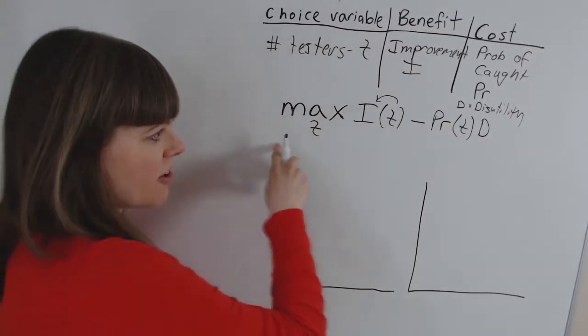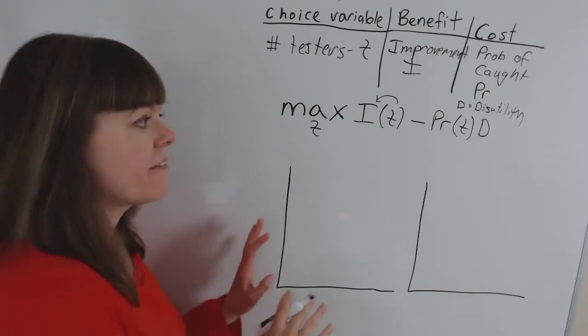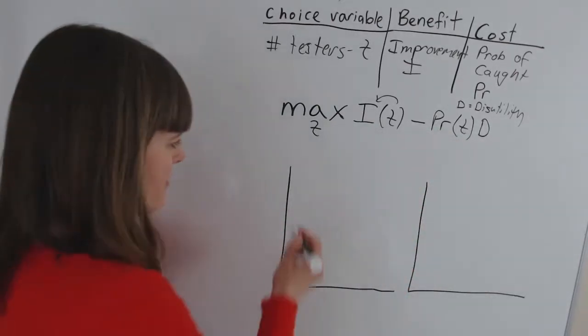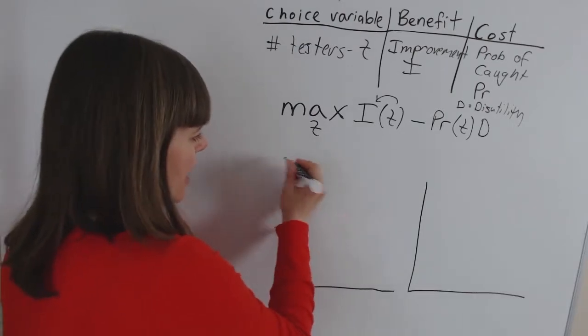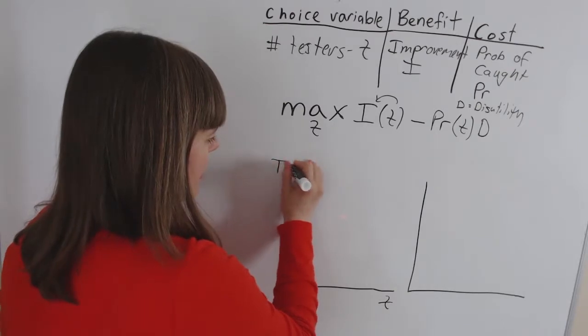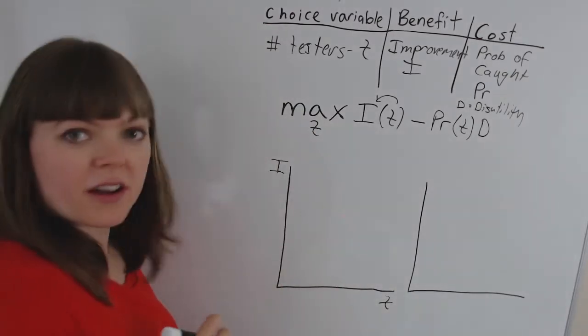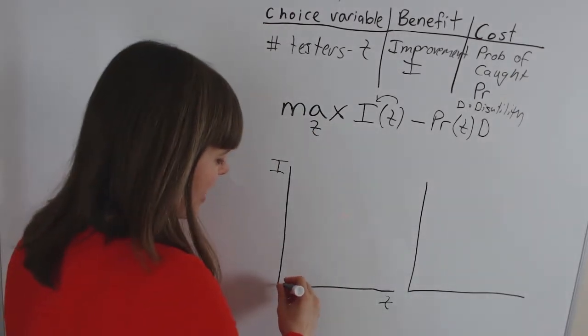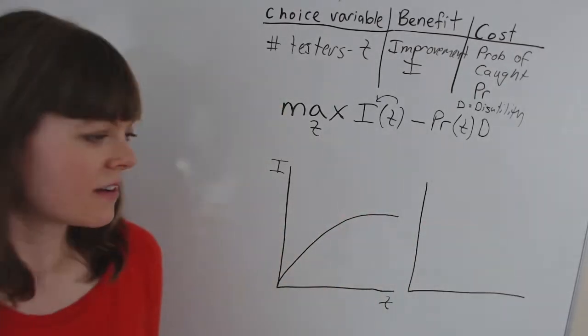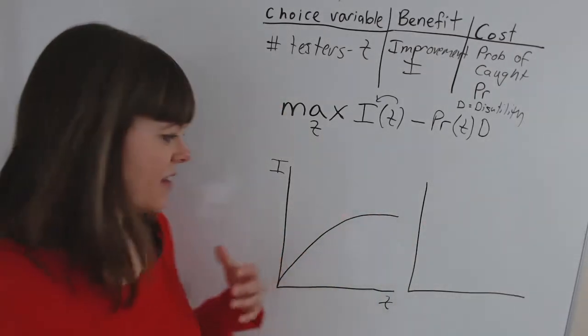So here's our model. Let's see if the shapes of these benefit and cost functions follow the classic benefit and cost function shapes. So here we'll have our choice variable always goes on the x-axis and we'll have our benefit improvement in the product on our y-axis. And the classic benefit shape has diminishing marginal benefit. So let's see if that makes sense in this case.